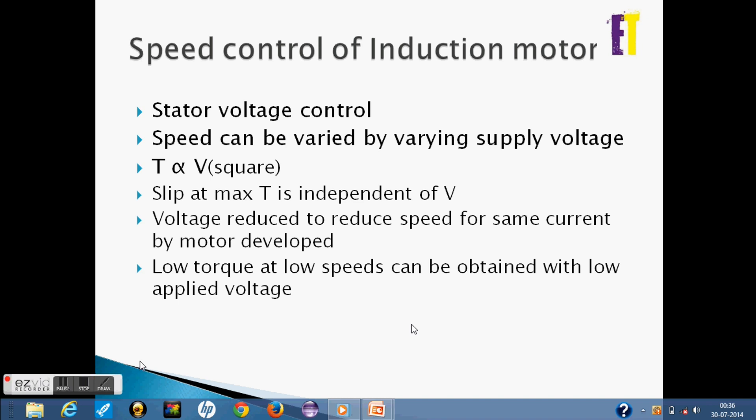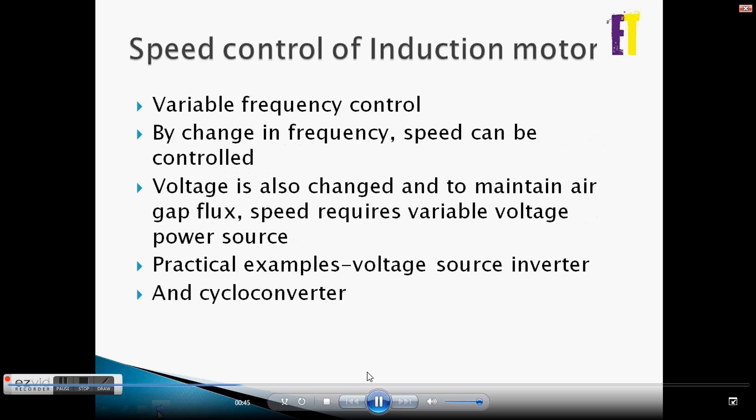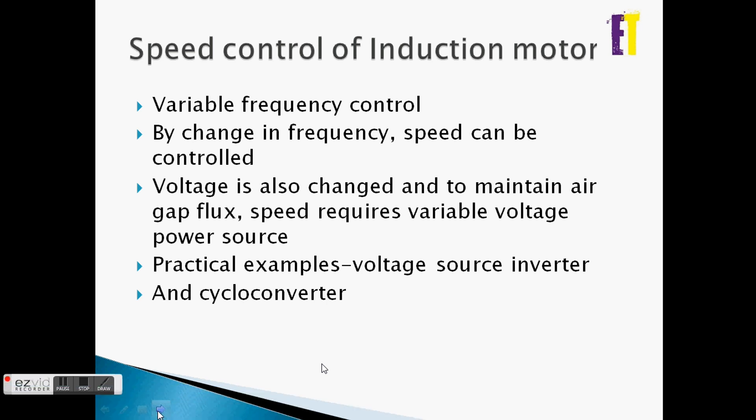After voltage control, we can change the speed through frequency control. The voltage will change, and the air gap flux will change accordingly. This method demands a variable voltage source. For example, using an inverter, we vary the frequency — converting from AC to DC at the mains, and then using a cycloconverter.